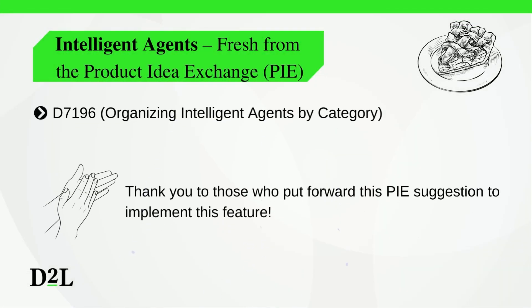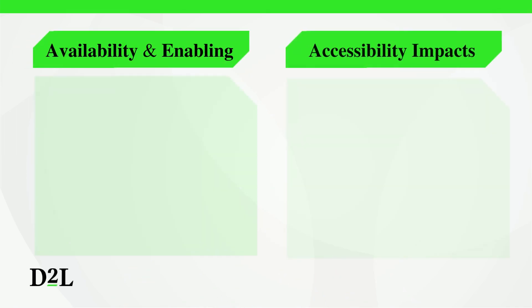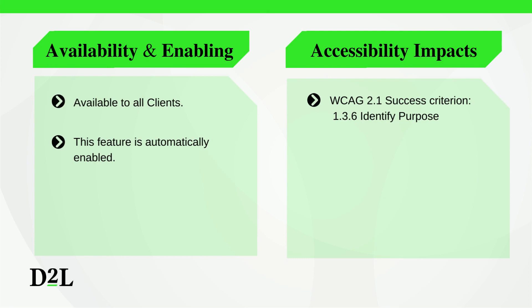The updates to the Intelligent Agent List page implement PIE item D7196. Thank you to those who put forward this PIE suggestion. The Intelligent Agent feature is available to all clients and is automatically enabled. It has the following accessibility impact: WCAG 2.1 Success Criterion 1.3.6 Identify Purpose.